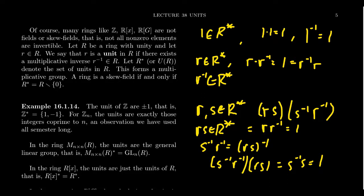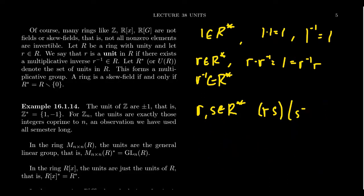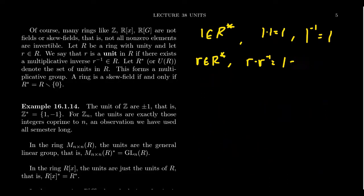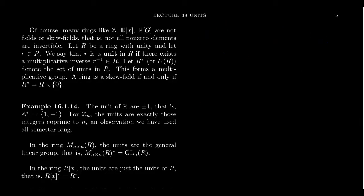So this is, in fact, a group — it's called the group of units, and it's a very important question as we study ring theory: what is the group of units for that ring? A ring is a skew field if and only if the group of units is everything that's non-zero.